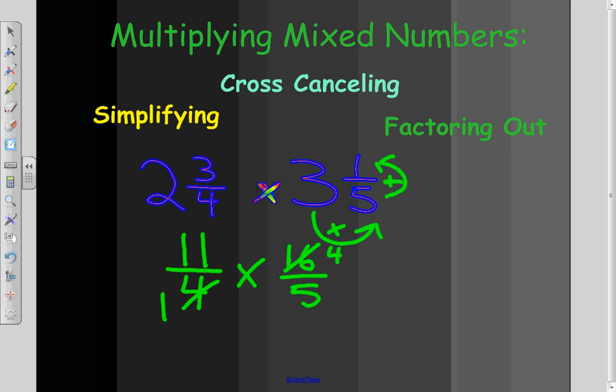Then, I can multiply my numerators. 11 times 4 is 44, and I can multiply my denominators, and I get 44 fifths.